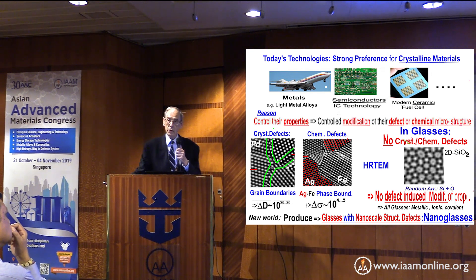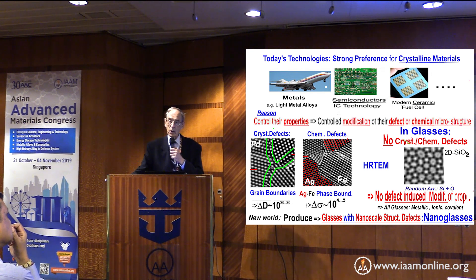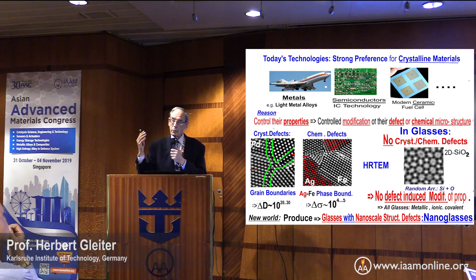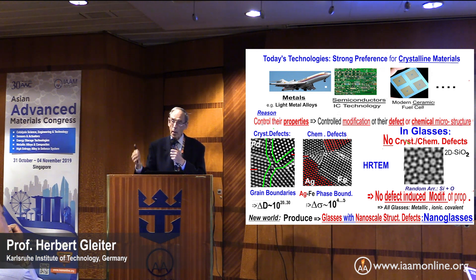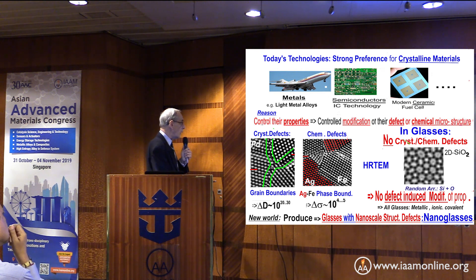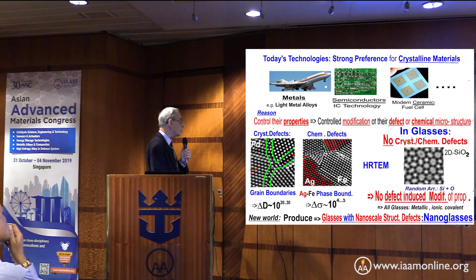If you look at today's technologies, you will easily recognize a very strong preference for crystalline materials — metals, semiconductors, ceramic materials. The reason is simple: we can manipulate their properties by controlling their defect structure and their chemical microstructure. Two examples are shown here: on the lower left side, a defect microstructure in a palladium crystal with grain boundaries, where atoms are arranged differently from the crystals next to them.